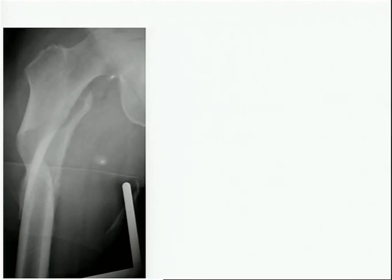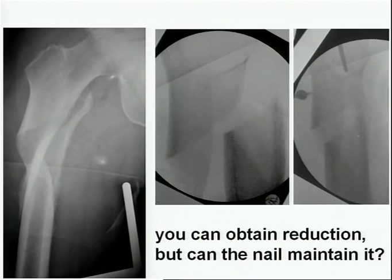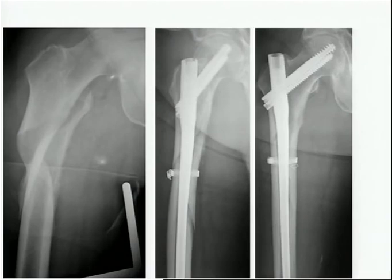But if you have a sub-trochanteric reverse oblique fracture with a third fragment, there is no intramedullary canal. So even if you perform stab incision techniques and obtain reduction, the nail may not be able to maintain it because a nail needs cortical bone. In these situations, you should think of cerclage wiring to create an intramedullary canal.